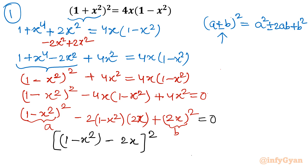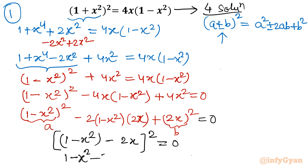The right-hand side is zero. Note this is a quartic equation so we will find four solutions — there will be four solutions. Once I take the square root, repetitive roots will come — we get multiplicity. So I will write 1 - x² - 2x = 0, or multiplying by minus sign, we will have x² + 2x - 1 = 0.